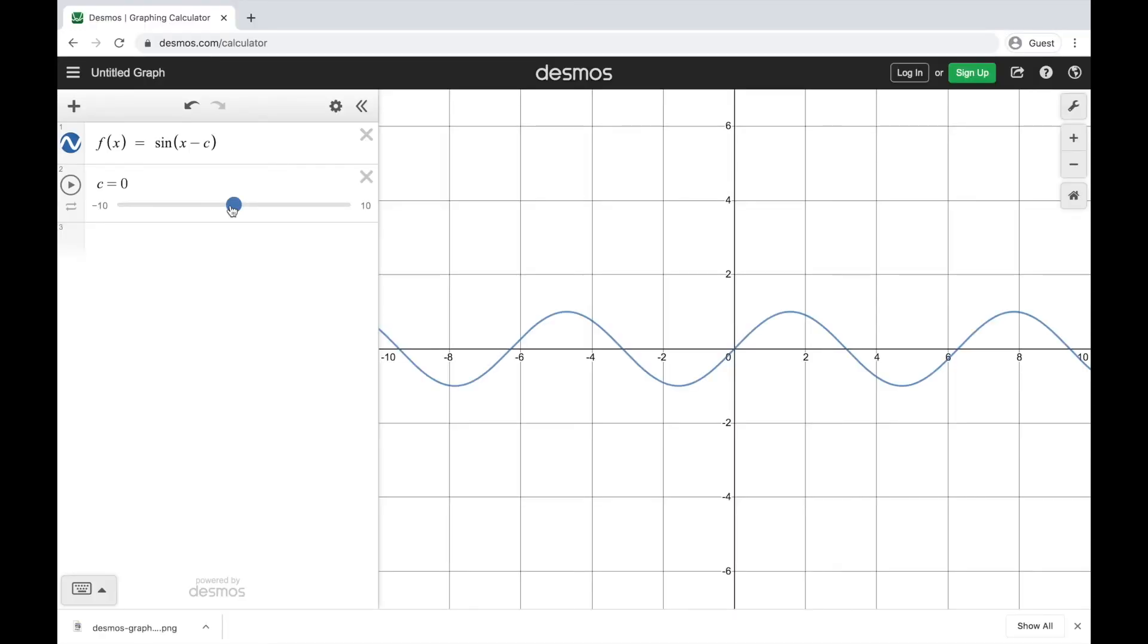Here's my normal graph for sine of x. You can see if I let c be a positive number, it's going to shift this graph further over to the right. Meanwhile if I make it negative, it's going to be shifting to the left. So positive numbers will shift it to the right, negative numbers will shift it to the left. And this tells you how far it shifted horizontally.